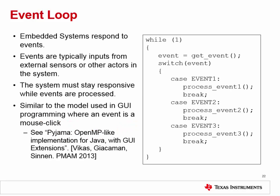Typically the way this works in an embedded system is that you have some sort of event loop. This is a very simplified presentation of the idea, but you've got an infinite loop: you have some way of getting an event from the world, you see what that event is, and you invoke the individual handler for that event. Those events are typically coming from sensors or other actors in your system. You have to stay responsive while those events are being processed — you can't just say get an event and go focus on that one event, ignoring all other events that are happening.